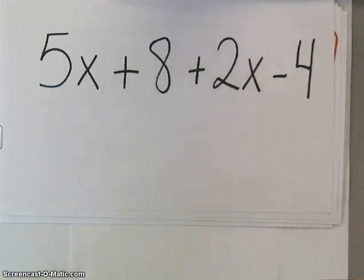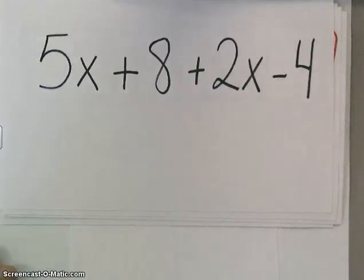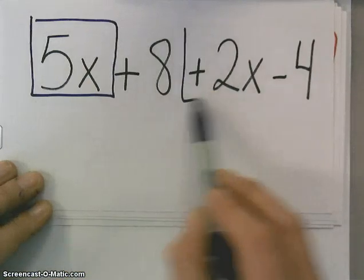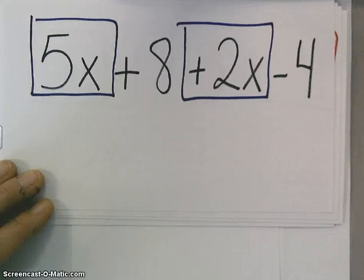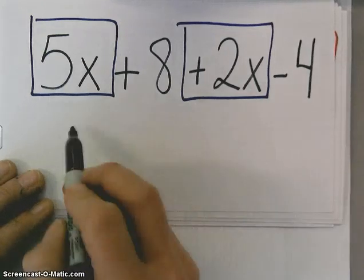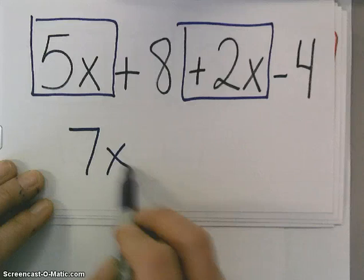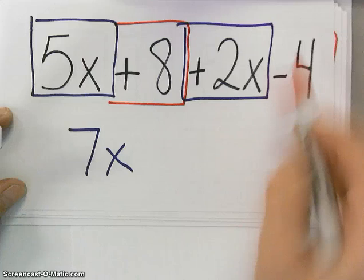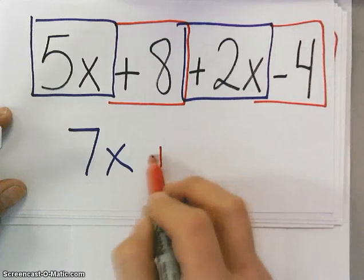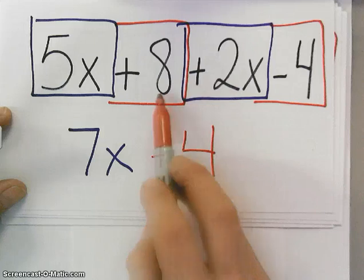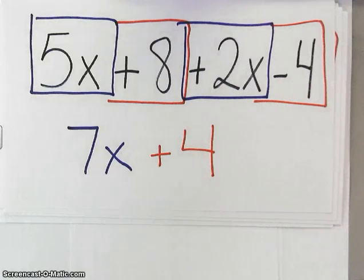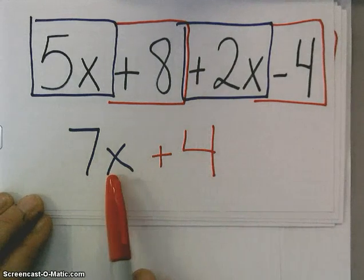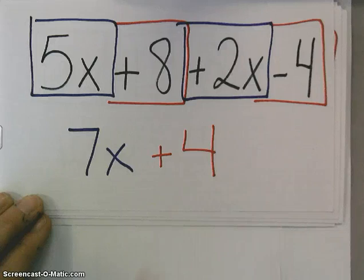Let's look at this one. Once again, look for our like terms. So, I have 5x's and I have 2x's. So, I have 5x and 2x gives me 7x. And then, I have a positive 8 minus 4 gives me a positive 4. When I do 8 minus 4, I get a positive 4. And, I can't do anything with this because it's kind of like my smiley face and my frown. I can't combine them because they're not the same thing.